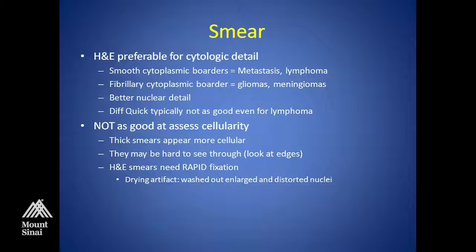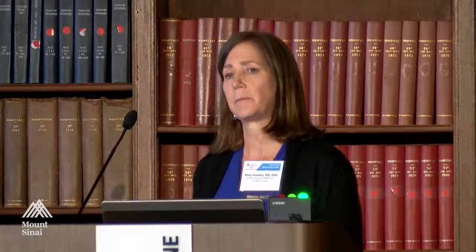One of the problems with a smear is that you can get drying artifacts if you don't rapidly fix it. Another problem is that you can't assess cellularity very well. Thick sections of the smear are going to look very cellular, while thin areas will look like there are not many cells. Reading through really big clumps of tissue can be problematic, especially if the tissue doesn't smear. If that happens, try to look at the edges of that mass of tissue — you can usually get some cytologic detail from there.